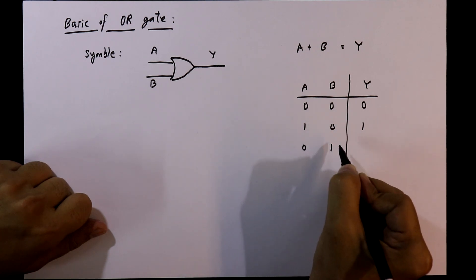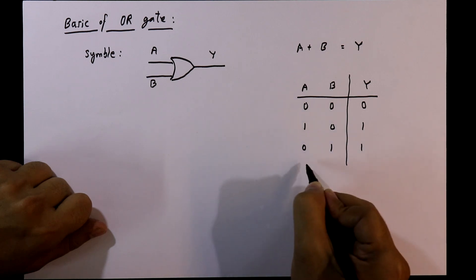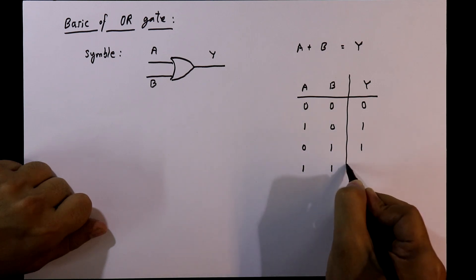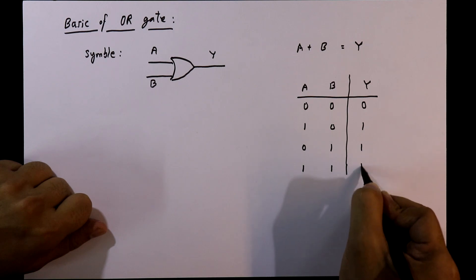A is 0, B is 1. Output will be 1. And if both the inputs are ON, then the output will be ON.